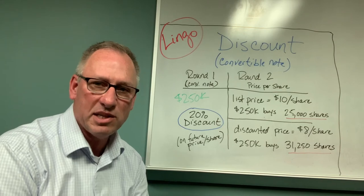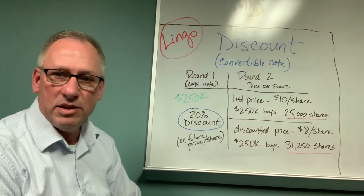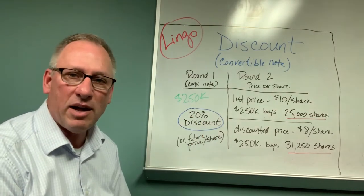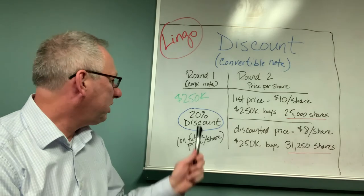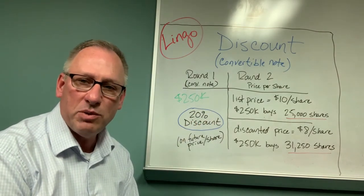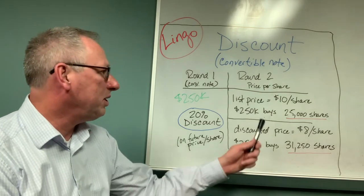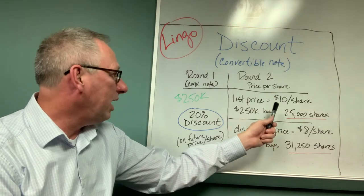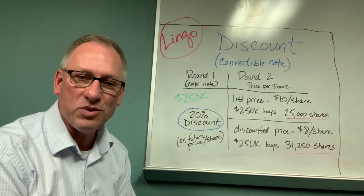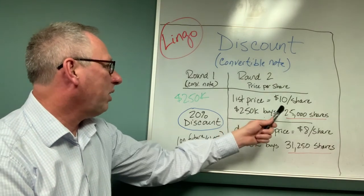Let's use that in an example here at the whiteboard. So in this case, in round one, that early investor comes in and they're going to put in $250,000, and they are putting a discount in this first scenario. So later on, round two comes along and they determine in that round, independent of the valuation, that the price is $10 per share — I'm calling that the list price here, $10 per share.